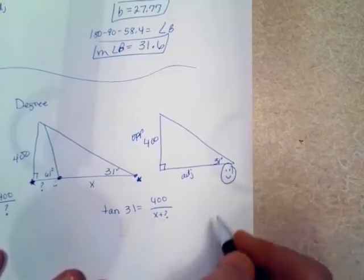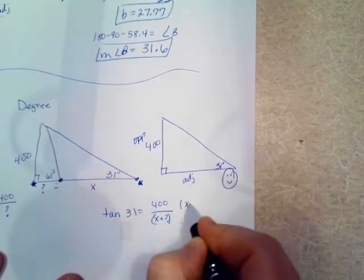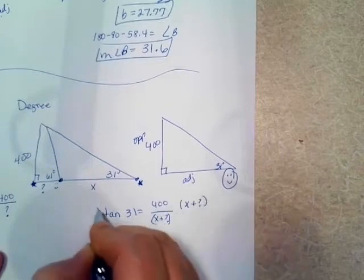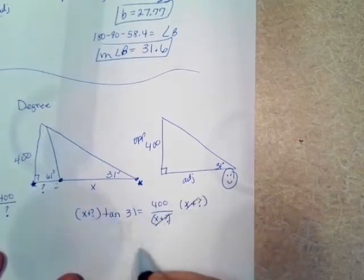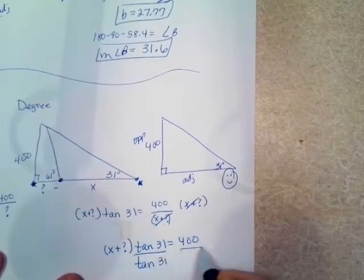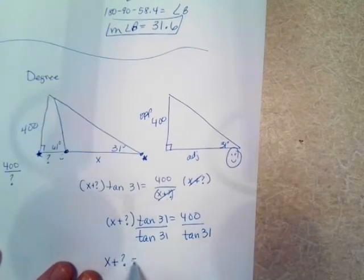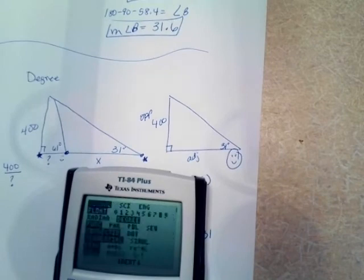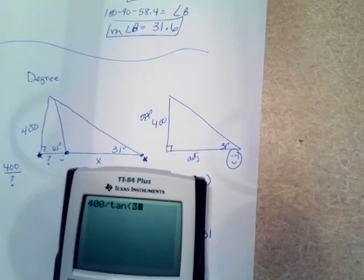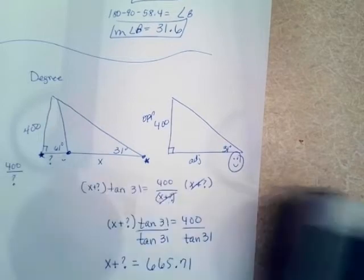Well, I know that I need to rearrange this equation. So I'm going to put that in parentheses, and I'm going to multiply both sides by that expression. And then I'll have, and I'll divide by the tangent of 31. So whatever they are together will equal, and we'll make sure I'm in degree mode, I am, 400 divided by the tangent of 31. I get 665.71. Okay, for the whole thing.